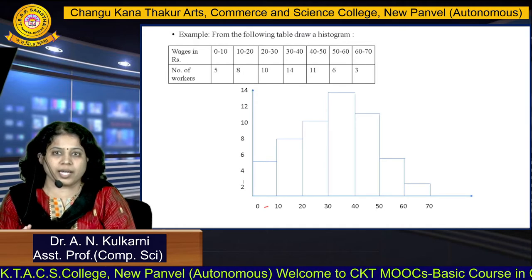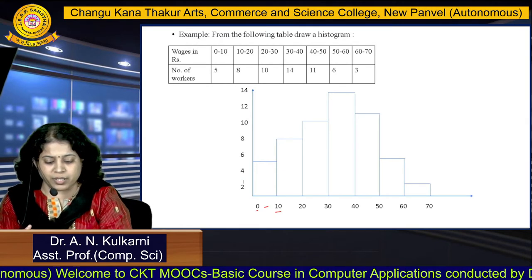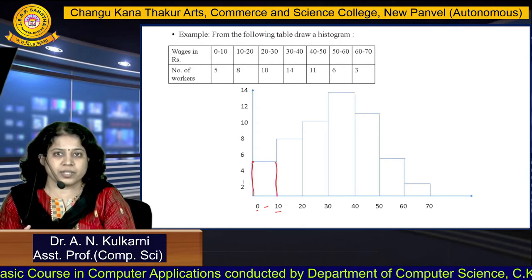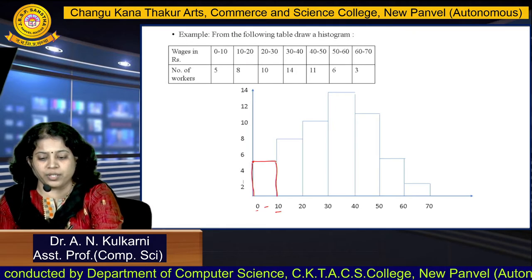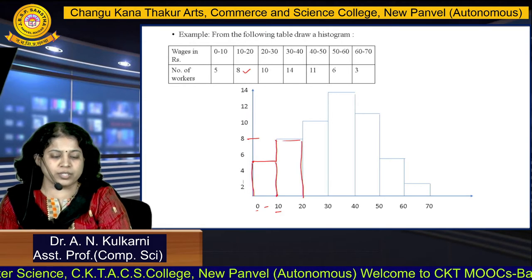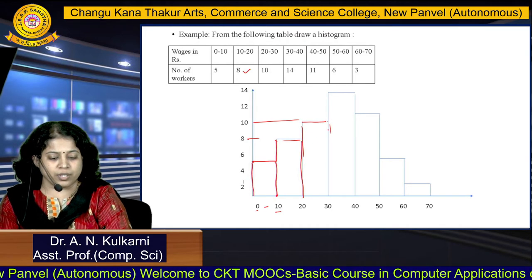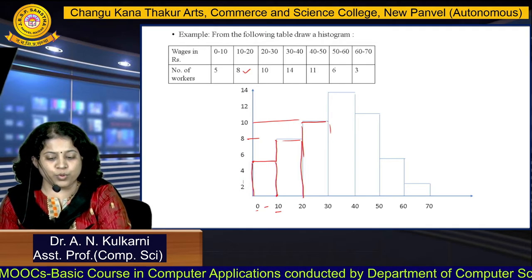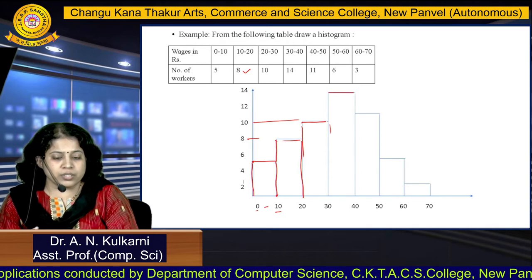For the horizontal axis, we consider the class interval. For 0 to 10, 0 is the lower limit and 10 is the upper limit. The number of workers is 5, so we draw vertical lines at 0 and 10 up to height 5 and join them with a horizontal line to form a rectangle. For 10 to 20, frequency is 8; for 20 to 30, it is 10; for 30 to 40, it is 14 — each forming rectangles joined by horizontal lines. In this way you can draw the histogram for the given data.